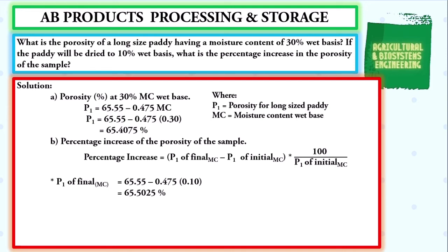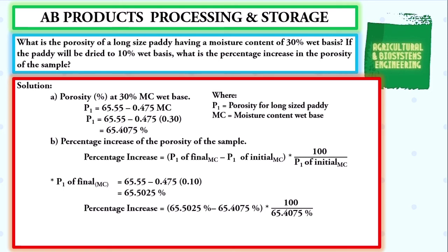After solving these values, we go back to our formula for the percentage increase. Substituting the values, we have: percentage increase equals 65.5025% minus 65.4075%, multiplied by 100, all over 65.4075%. We simply solve and we have percentage increase equal to 0.095% times 1.5289, giving us a final value for our percentage increase of 0.15%.